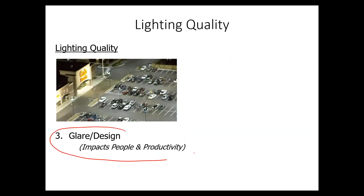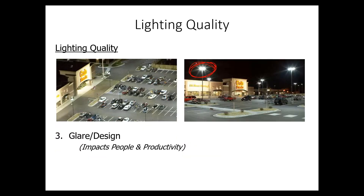The last area of lighting quality is the impact of glare and design. This is a big issue with LED lights because they give off so much more light — they're brighter and much better at targeting than traditional sources. This aerial photo of a parking lot shows the light distribution looks great, but if you were to experience that parking lot as a user, the glare could be somewhat of a problem. You have to balance glare and design, as it definitely impacts people and productivity. Productivity is worth a hundred to a thousand times the value of the energy savings.